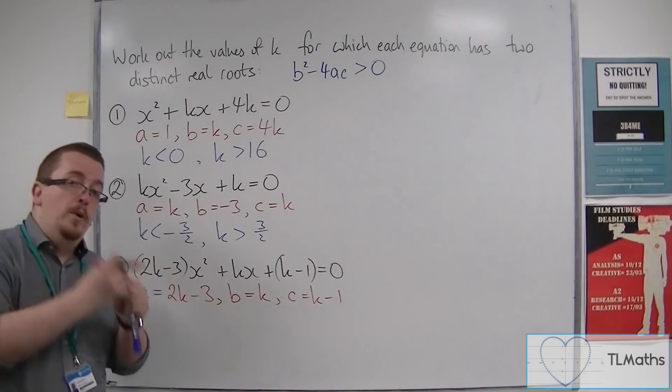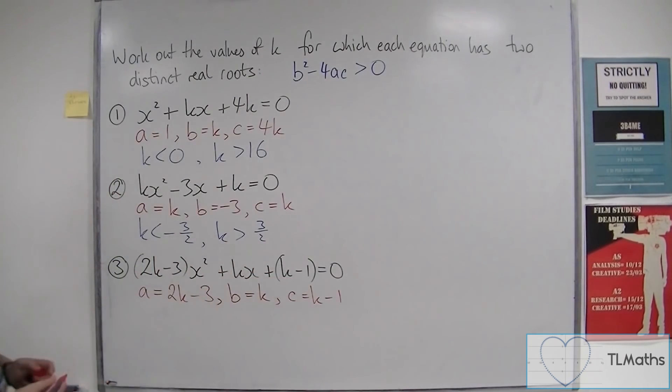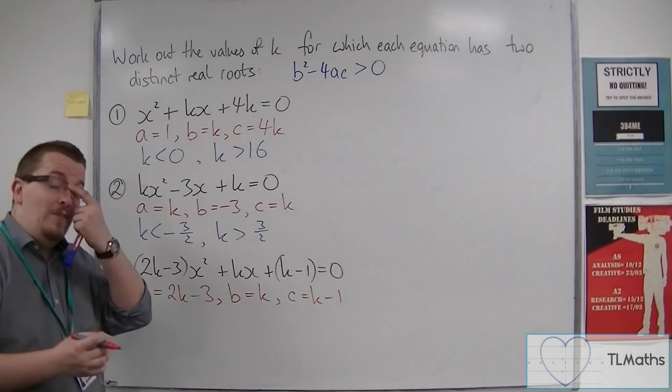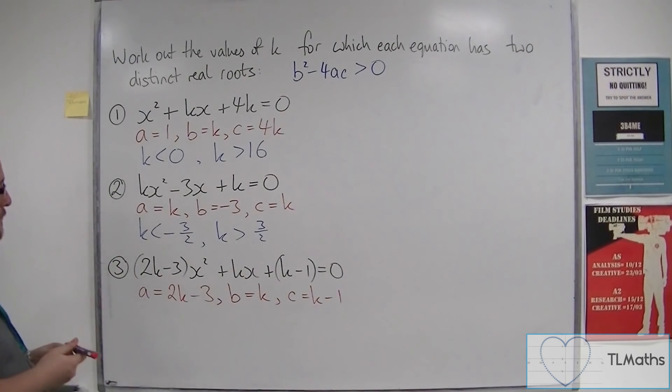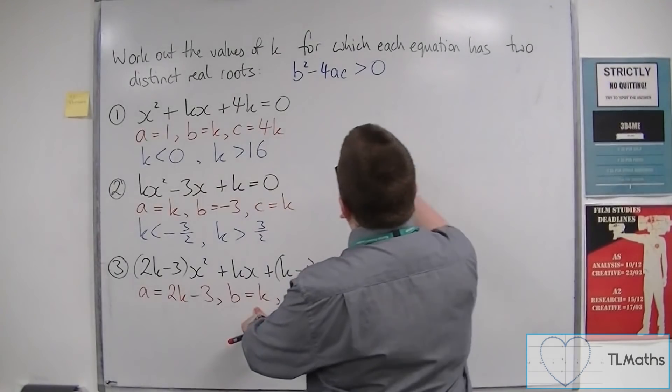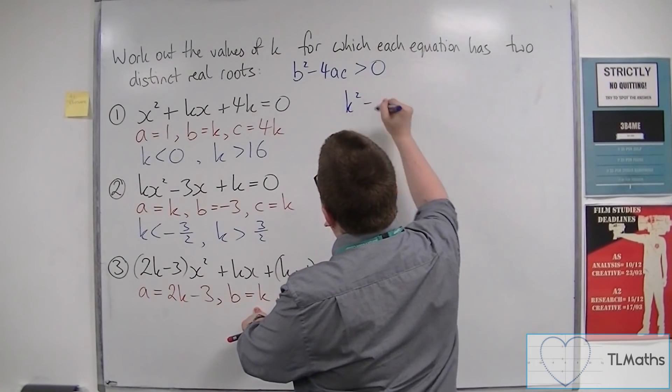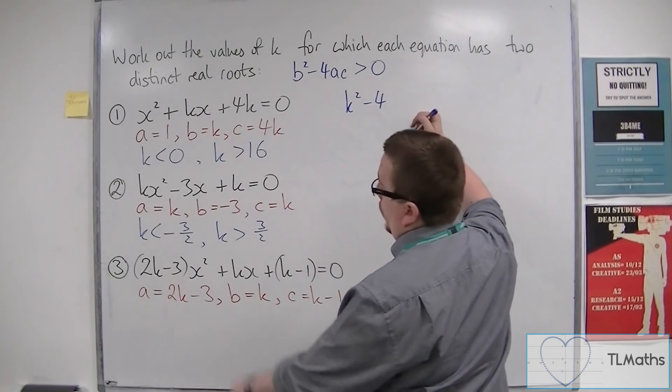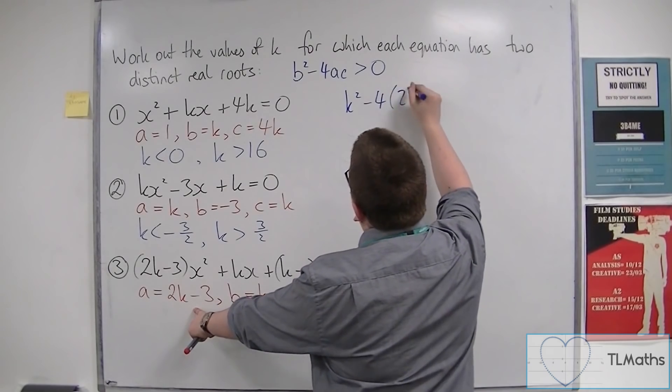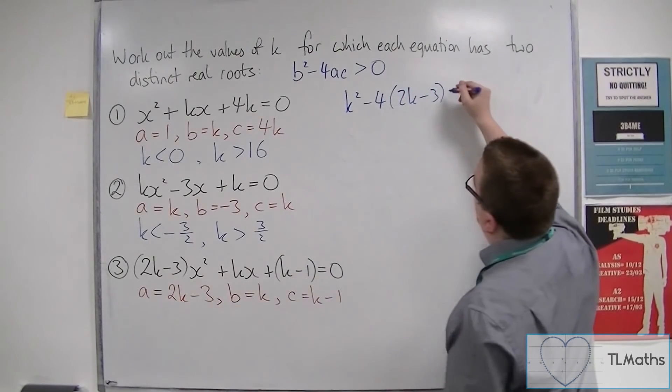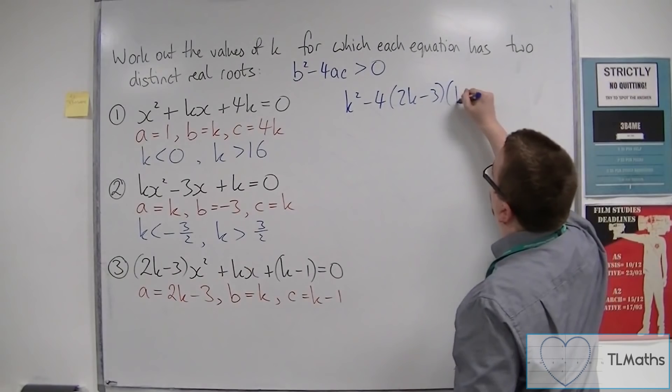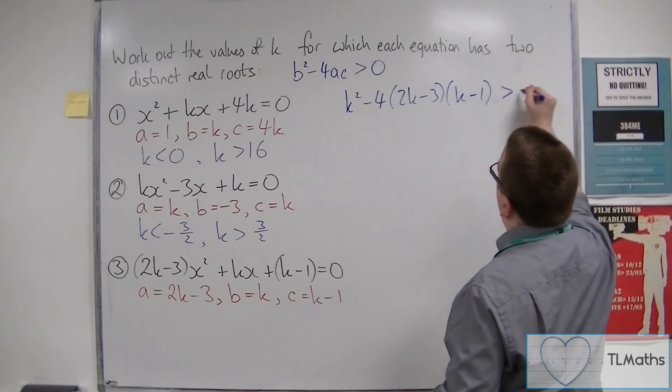I've helpfully put it into a bracket to easily identify it. But that doesn't necessarily mean that it will be in a bracket. So we're going to substitute these into the inequality. So we have b squared, so that's k squared, minus 4, times a, which is 2k minus 3, times c, which is k minus 1. And that's going to be greater than zero.